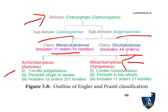In Archichlamydeae, the calyx and corolla are present with free petals (polypetalous), while in Metachlamydeae the petals are fused (gamopetalous). Apetales refers to free petals and sympetales refers to fused petals. The polypetalous group, with single or double perianth, includes 33 orders and 201 families. The gamopetalous group, with perianth in two whorls, includes 11 orders and 57 families.